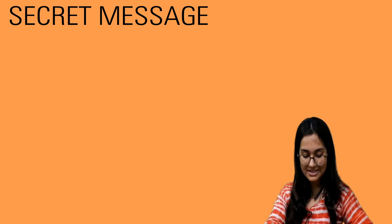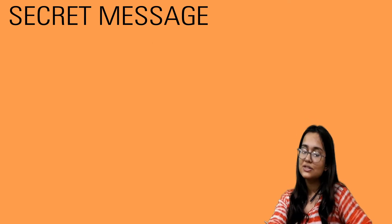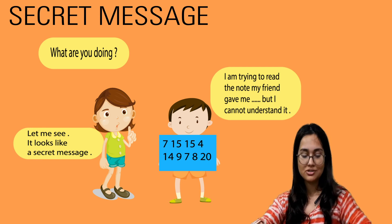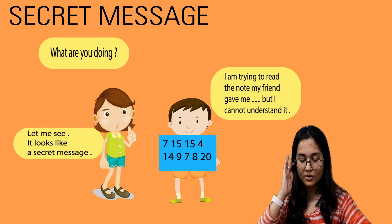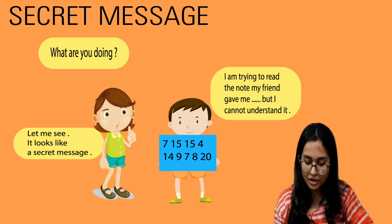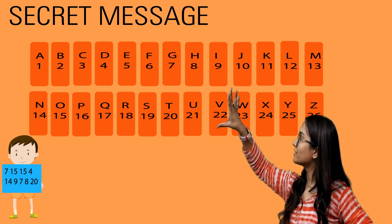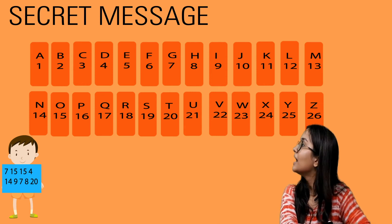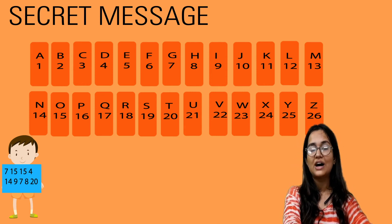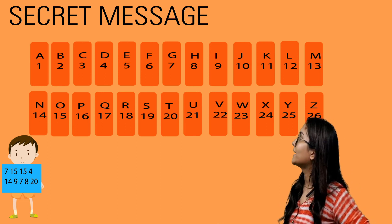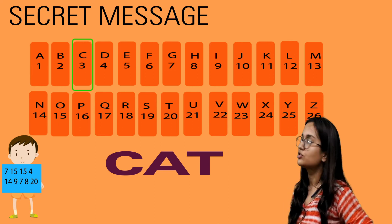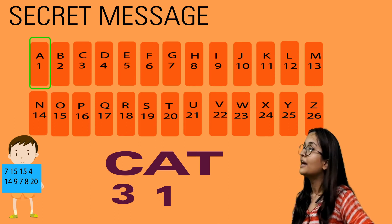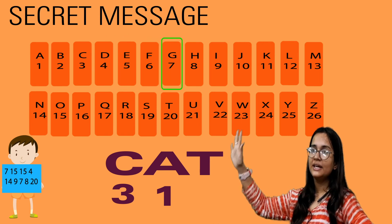Then we have secret messages. Someone wrote a secret message and said: 'What are you doing? Let me see — it looks like a secret message. I'm trying to read the note my friend gave me and I cannot understand it.' To decode it, you write the letters A to Z and assign them the numbers 1 to 26 — one number for one letter, so A is 1, B is 2, and so on.